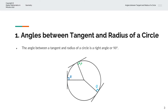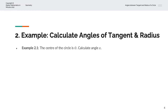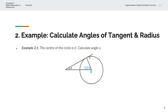Let's consider a couple of examples to visualise this. In the first example, we're given the centre of the circle as O, and we're asked to calculate angle X. We have a tangent line that touches the circumference of the circle. Connecting that tangent line to the centre of the circle gives a right angle or 90 degrees, which we'll label Y. We now have a triangle, and we know two of its angles, so we can calculate the third.